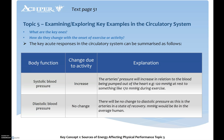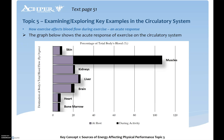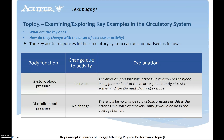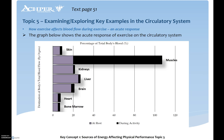Blood pressure also changes — there's an obvious increase in blood pressure as more oxygen circulates around the body. Increased blood pressure as a health risk comes from having a higher heart rate all the time, which means we're not as efficient with oxygen delivery. But when we initially start to exercise, blood pressure will obviously increase because we have more blood flow around the body.